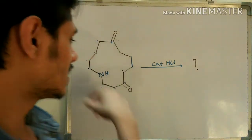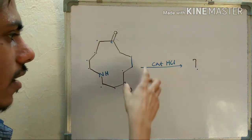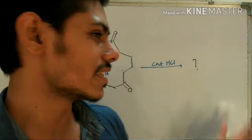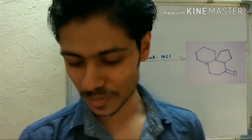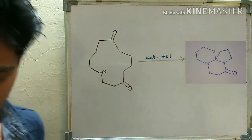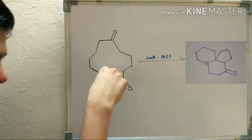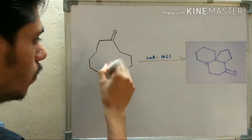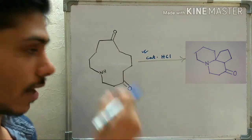So you can see this is the molecule you are given with, and it is treated with HCl — what will be the product? This is the beautiful product of this beautiful reaction. Now the question is what is happening. This is a big molecule with two carbonyl groups and one amine group, and catalytic HCl is given.